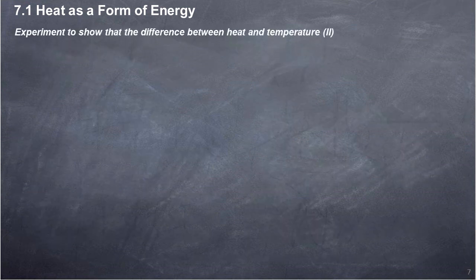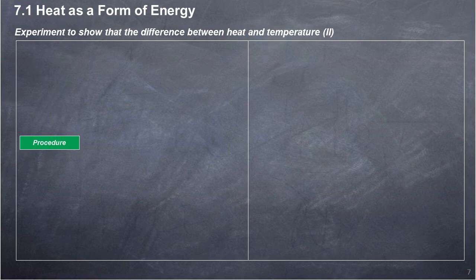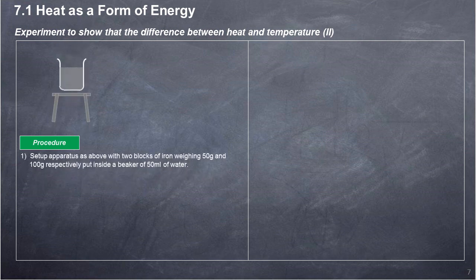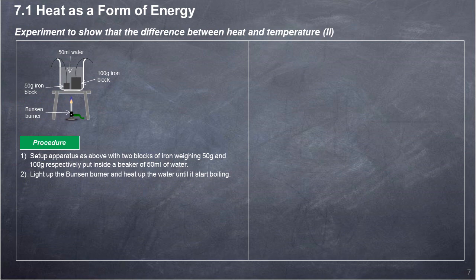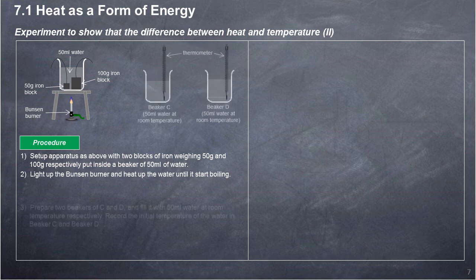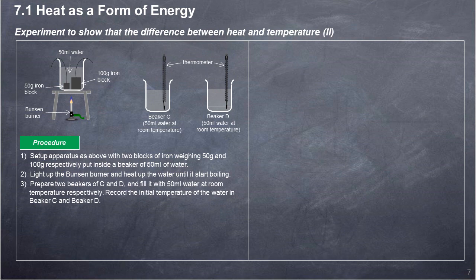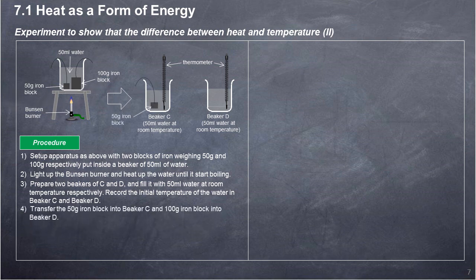Experiment 2 to show the difference between heat and temperature. Procedure: Set up apparatus with two blocks of iron weighing 50 grams and 100 grams respectively, put inside a beaker of 50 ml of water. Light up the Bunsen burner and heat up the water until it starts boiling. Prepare two beakers C and D, and fill each with 50 ml water at room temperature. Record the initial temperature of the water in Beaker C and Beaker D. Transfer the 50 g iron block into Beaker C and the 100 g iron block into Beaker D.